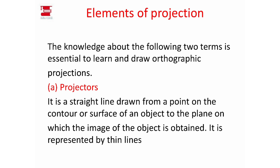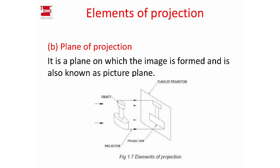We are going to talk about the plane of projection. In this figure, we have a plane of projection. We have an object in the surface and horizontal lines. The projectors and the plane of projection together define orthographic projection.